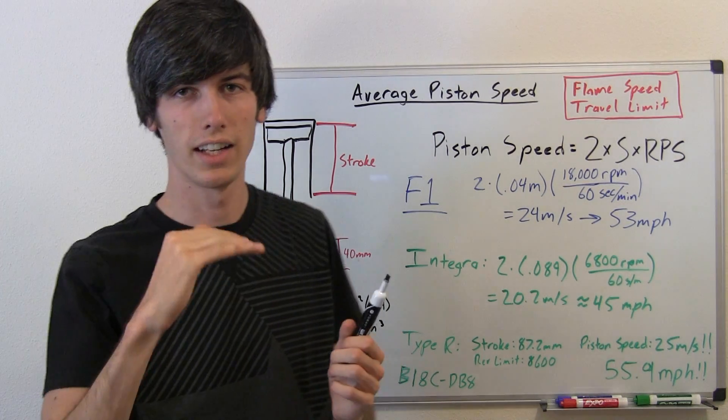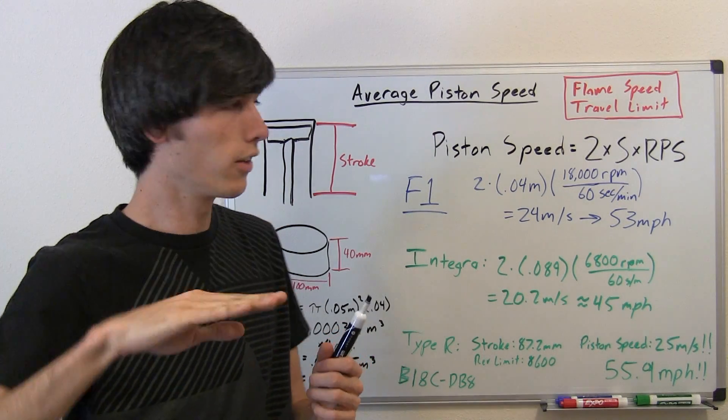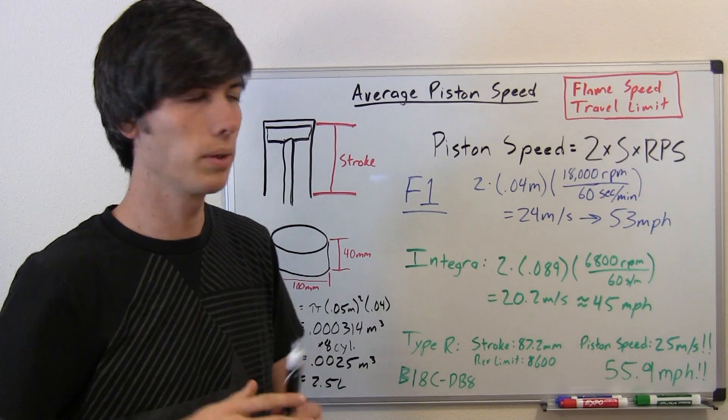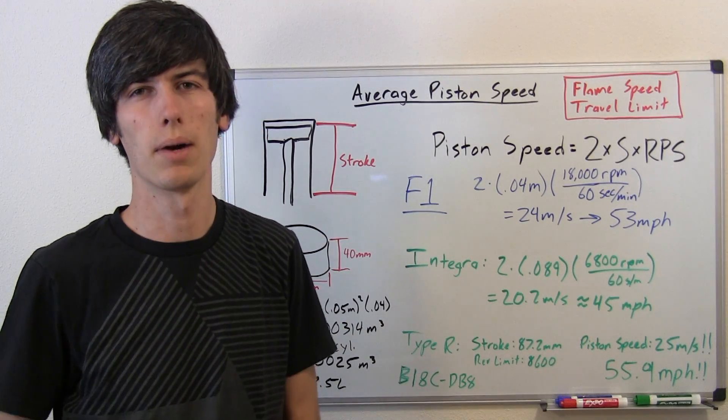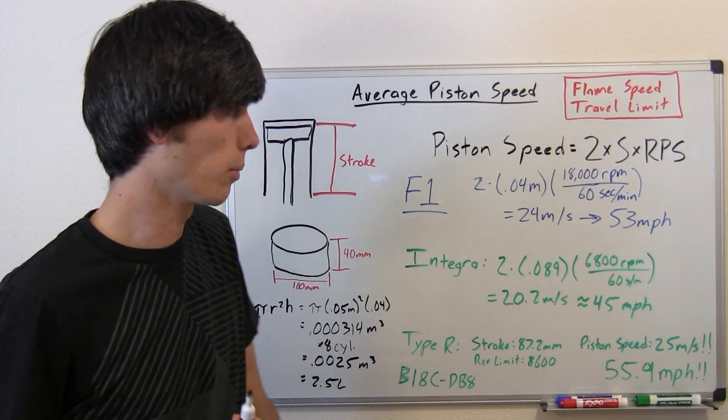That piston inside of that cylinder is moving, if it were to be moving at a constant speed, it would be 24 meters per second or 53 miles per hour. That's pretty crazy to think about.